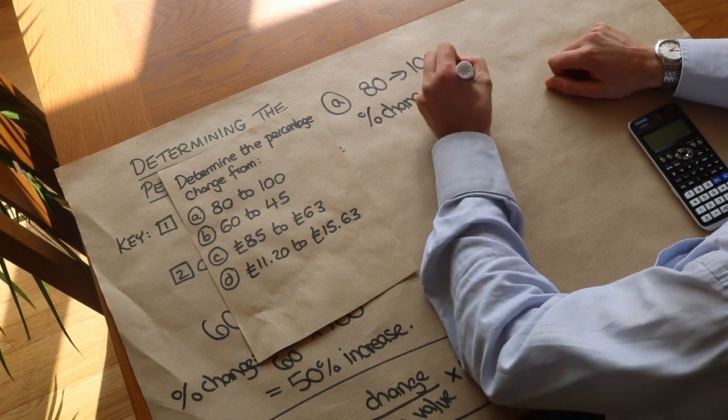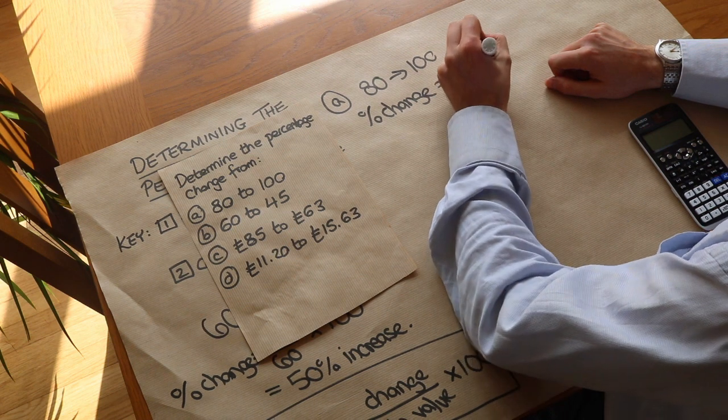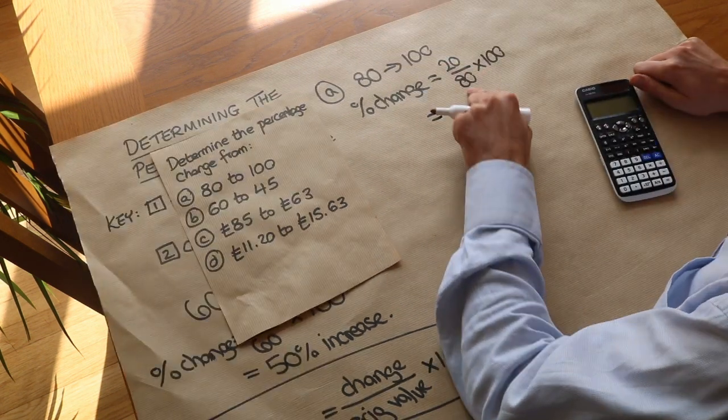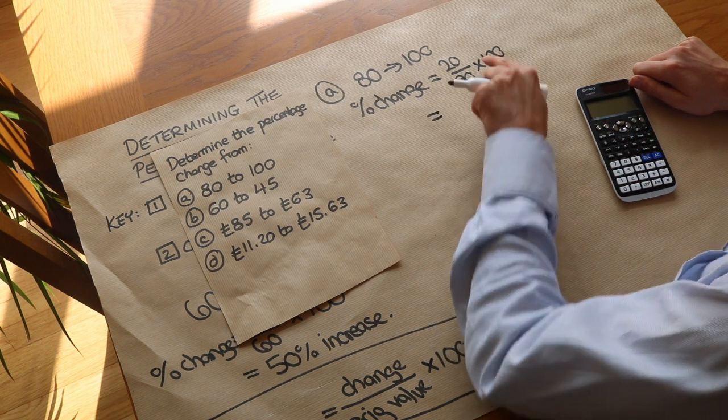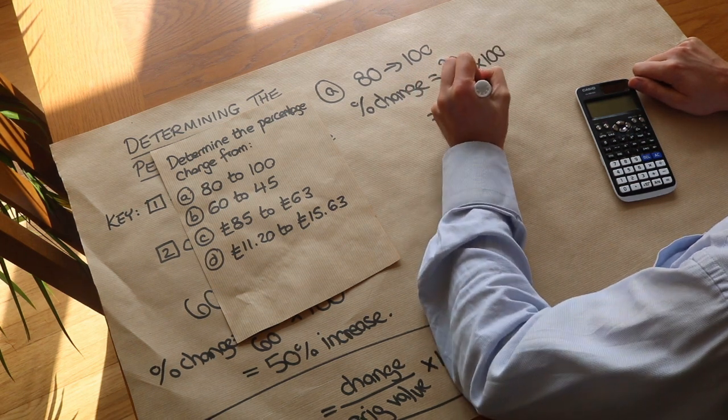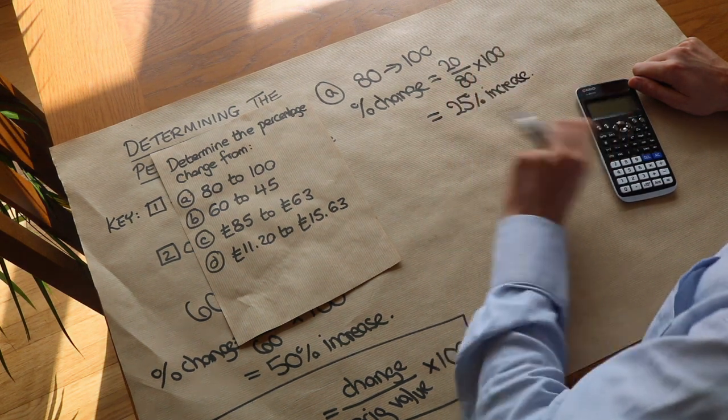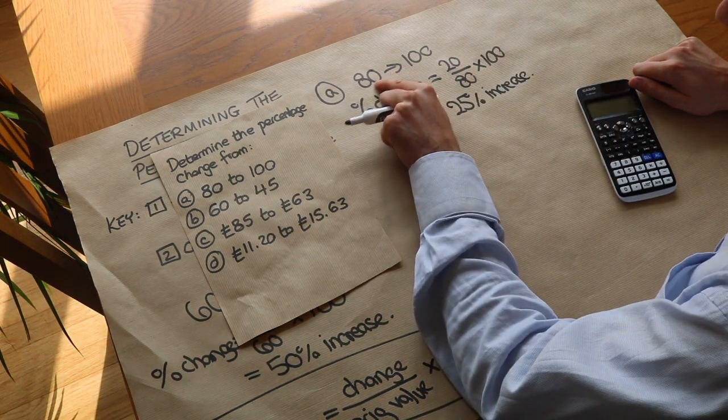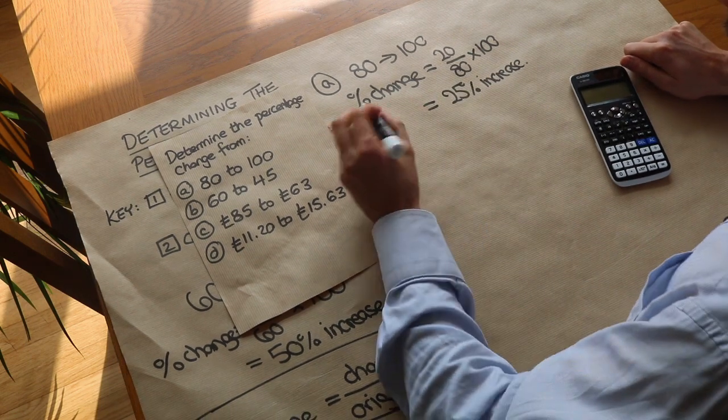So it's 20 over 80, and we times by 100 to convert to a percentage. So 20 over 80, we know that's a quarter, and a quarter times 100 is 25. So it's a 25 percent increase. That one we can do in our head because we know that 20 is a quarter of 80, and a quarter is 25 percent.